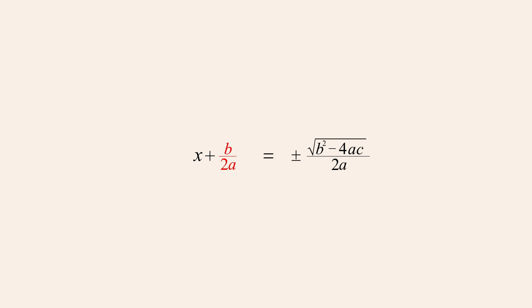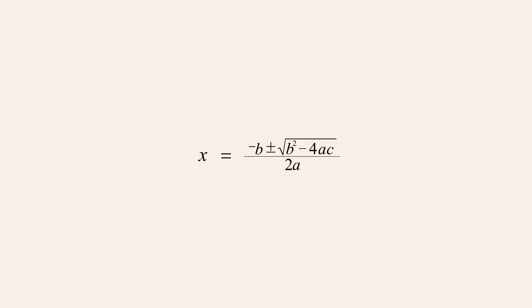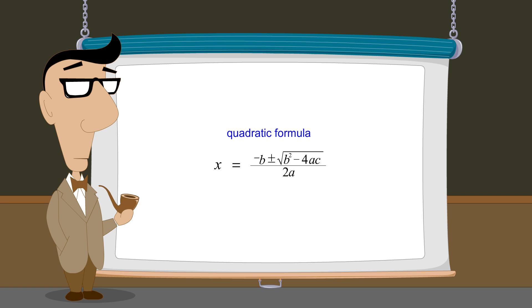We then move b over 2a to the right side by subtracting it from both sides. And since both fractions on the right have a common denominator, a single fraction can be formed by combining their numerators. We now have a formula that gives the values of x that are the solutions to any general form quadratic equation. This famous formula is known as the quadratic formula.